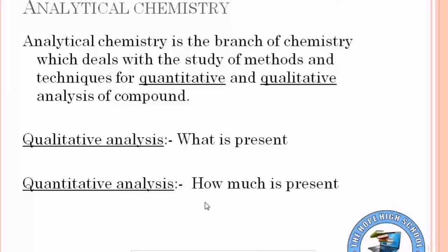For example, if we take a sample from any crop, first we will do qualitative analysis — we will see what is present in the sample: what protein is present, what iron is present, what vitamins are present. Then we do quantitative analysis: how much protein is made, how much iron is made, how much vitamins are present. The methods and techniques used for any such qualitative and quantitative analysis are called analytical chemistry.